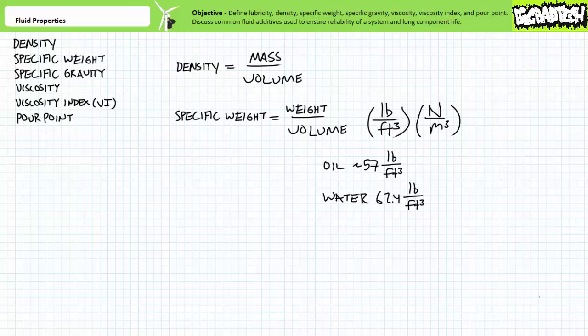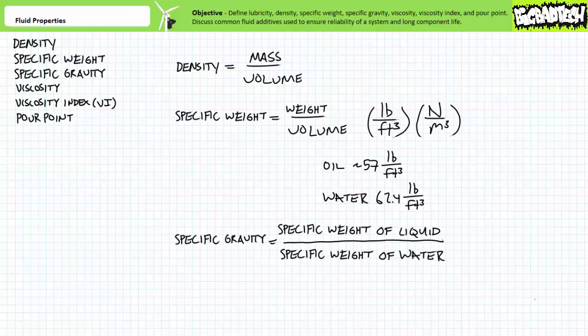Water is an excellent reference point for a number of chemical properties, and it serves as the standard by which specific gravity is measured. Specific gravity is the ratio of the specific weight of a particular liquid to the specific weight of water. Specific gravity, since it's dividing like units, is a dimensionless quantity. Given a hydraulic oil with a specific weight of 57 pounds per cubic foot, and water with a specific weight of 62.4 pounds per cubic foot, the specific gravity of this oil is 0.913, meaning this oil is lighter than water and would float on top of it. The specific gravity of water, since it is water, is one.